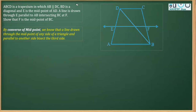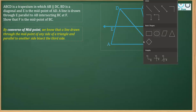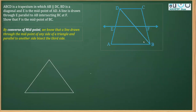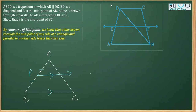The theorem says that in a triangle — let's say triangle ABC — if a line is drawn through the midpoint of one side, say point P being the midpoint of one side, and through P you draw a line which is parallel to the second side BC...